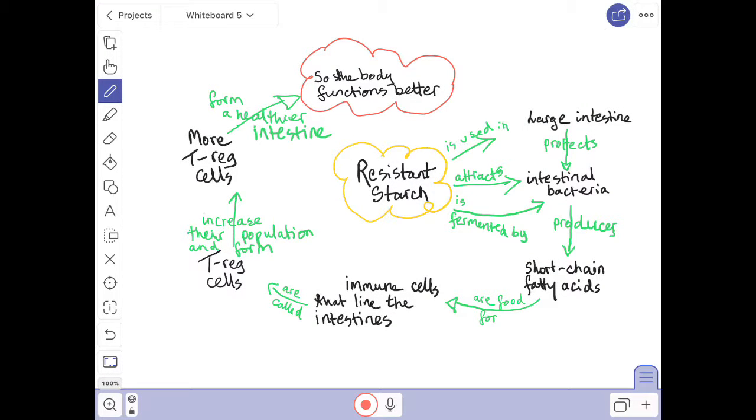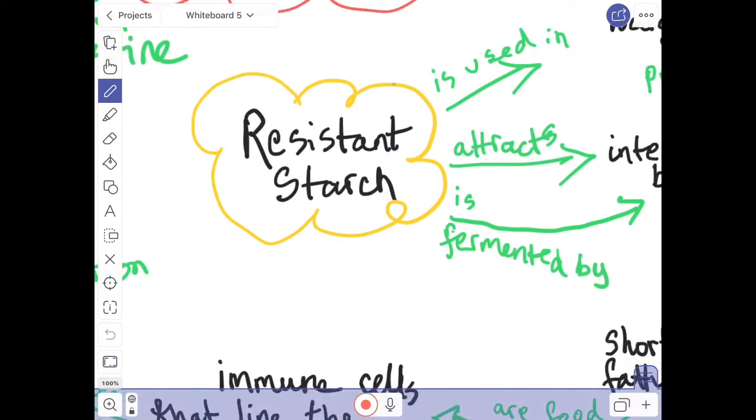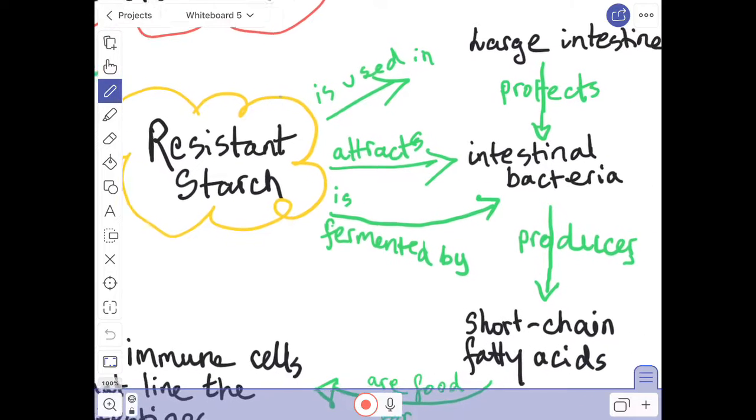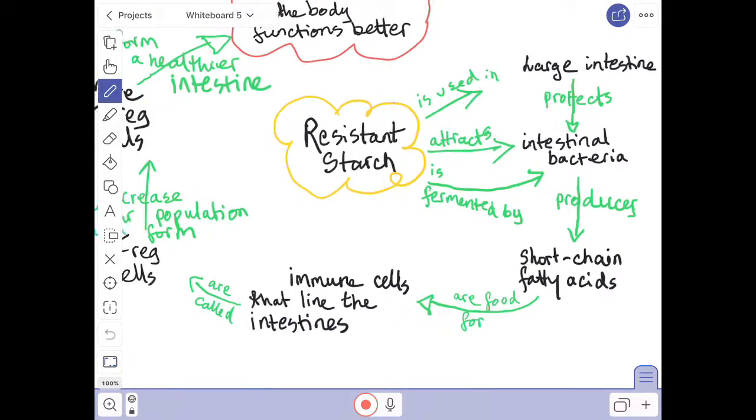I tie the words in black together with arrows which form a little sentence. So it reads like this: resistant starch is used in the large intestine. Resistant starch attracts intestinal bacteria. The large intestine protects these intestinal bacteria. Resistant starch is fermented by the intestinal bacteria which produce short chain fatty acids.